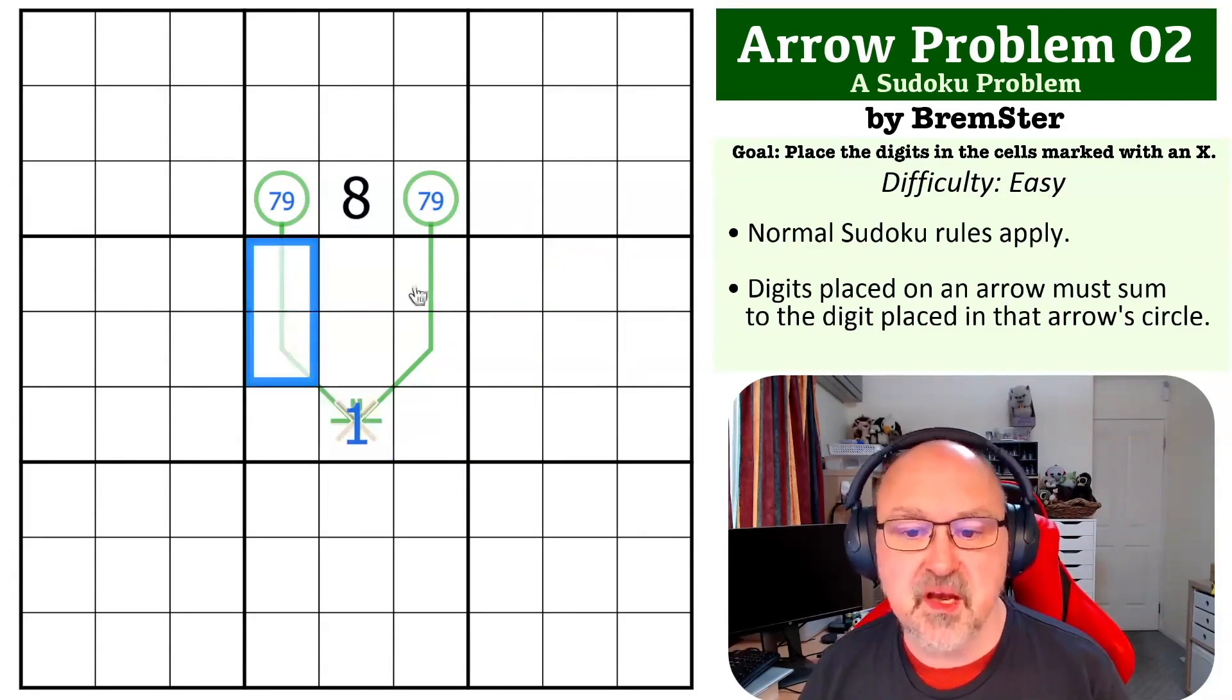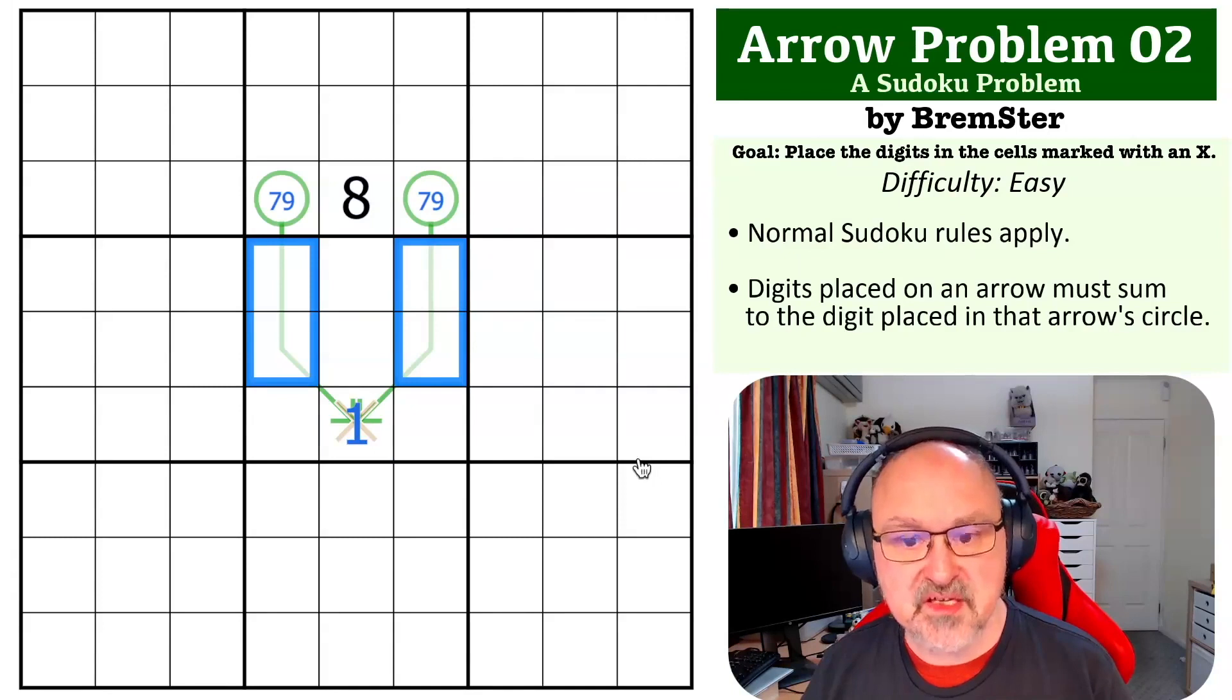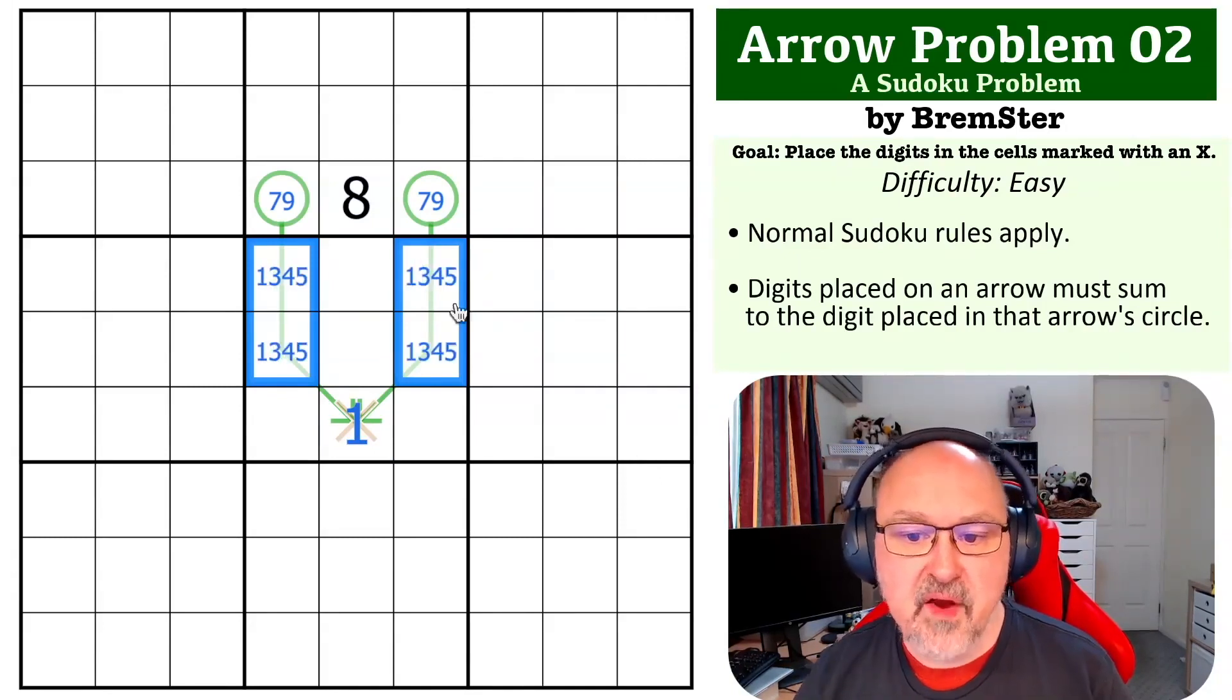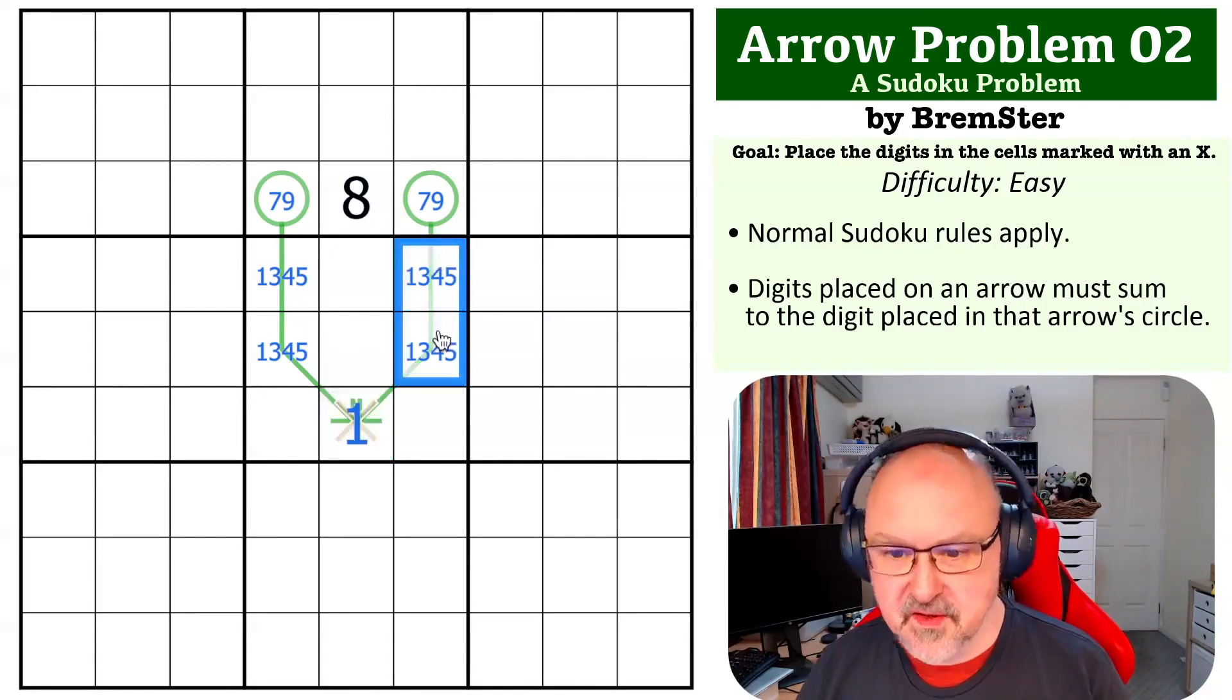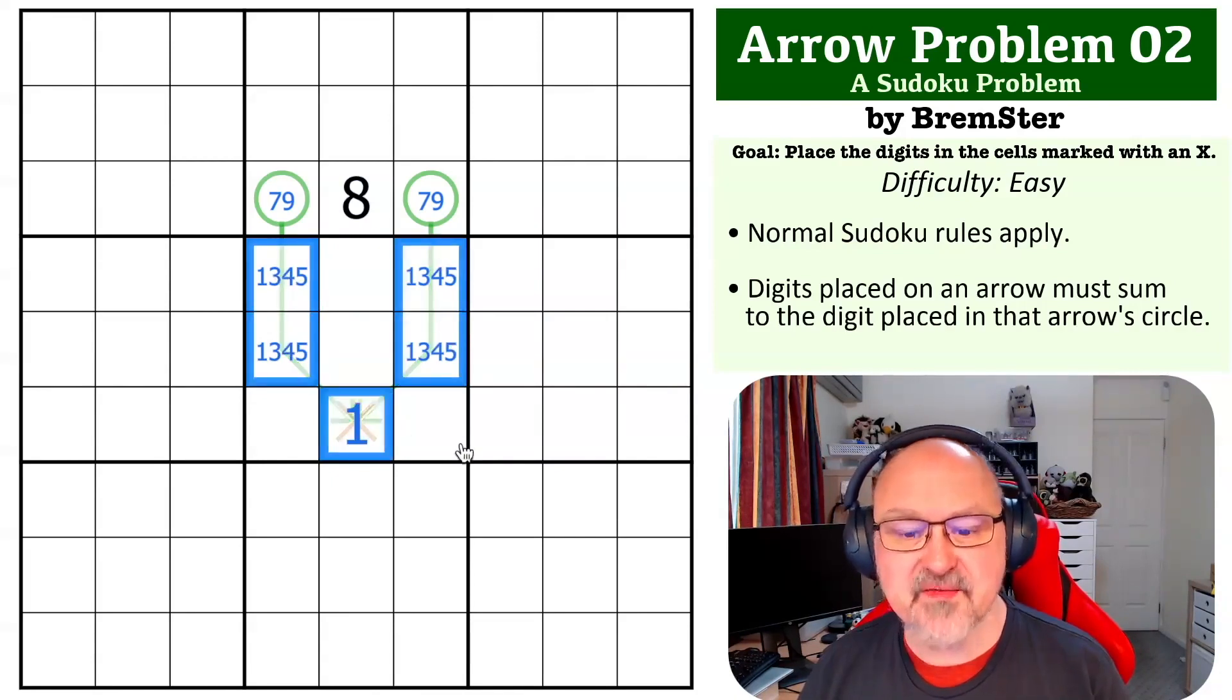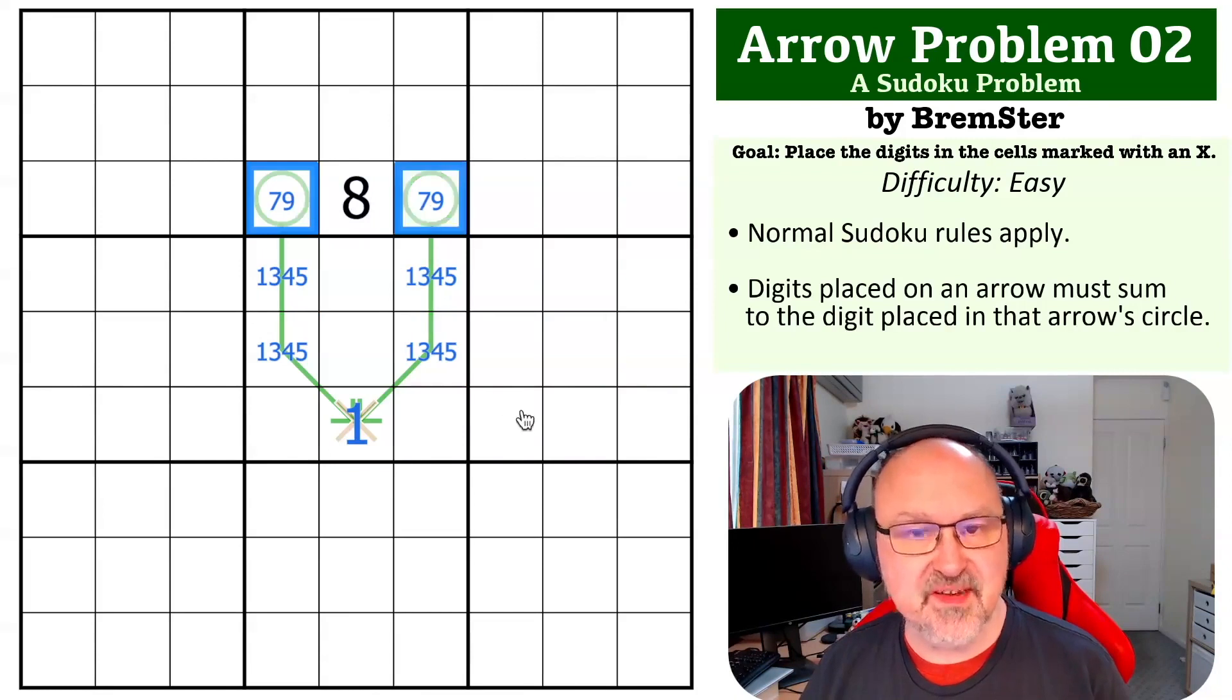But if I was to put 2 in here, the minimum that I could put into these cells would be 1, 3, 4, and 5. 1, 3, 4, and 5 sum to 13. 13 plus 4, because this would be doubled, is 17. I'd have to put 17 into these cells. The only way to make 17 is 8 and 9, and I can't do it because the 8's not available.